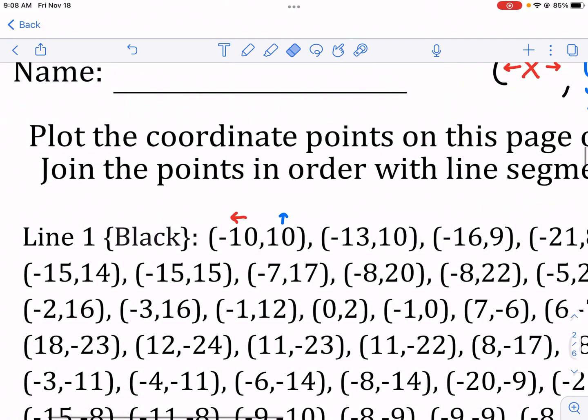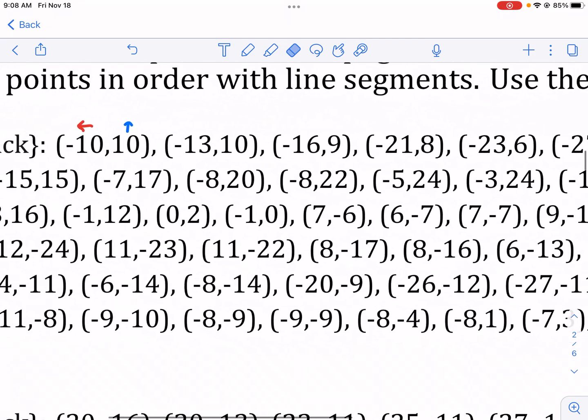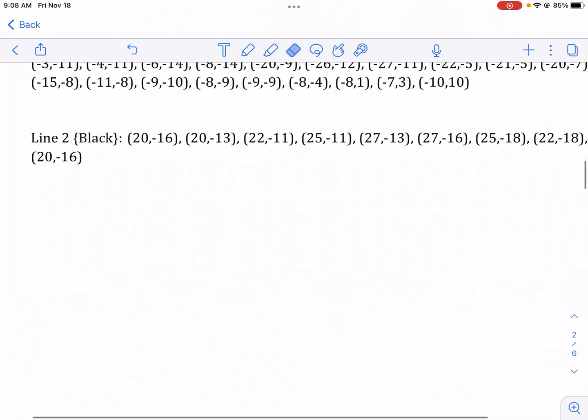So how do we do this? Well, the first one like I said is negative 10, 10. So that means we're gonna go left 10 and then we're gonna go up, because the negative X moves us to the left and then a positive Y will move us up. So let me go ahead and plot that point just so you can see what it looks like.